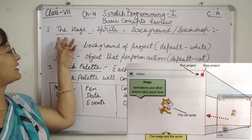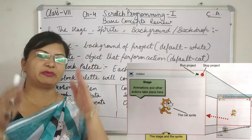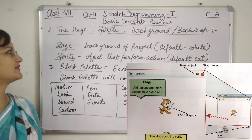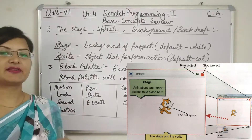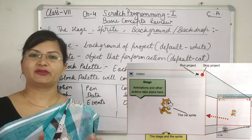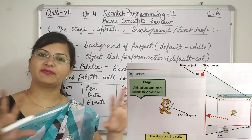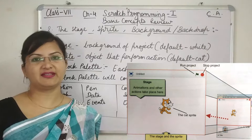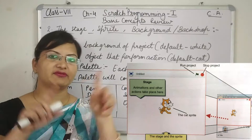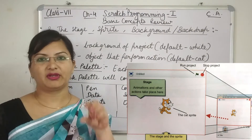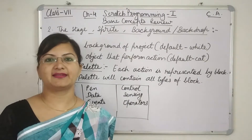The second section is Stage, Sprite, Background and Backdrop, visible on the left side. Stage is actually the background of the project — you can set a green background, a sky background, or a background with trees. Sprite is the object that will move on the screen, such as a cat, flies, or a ball.